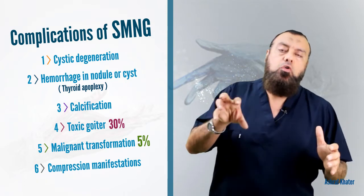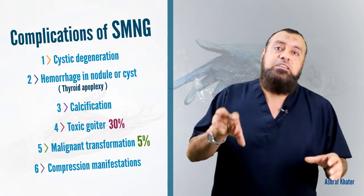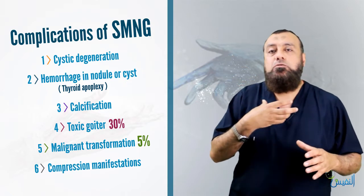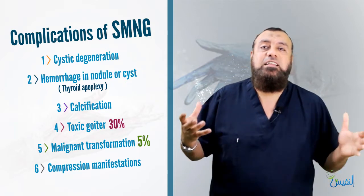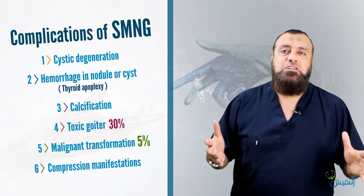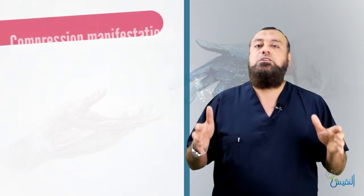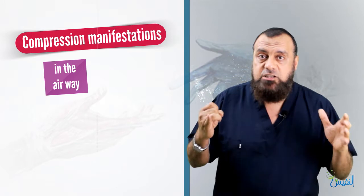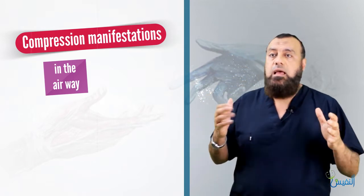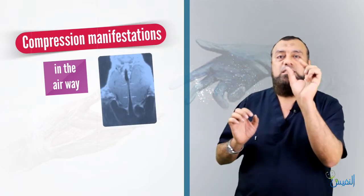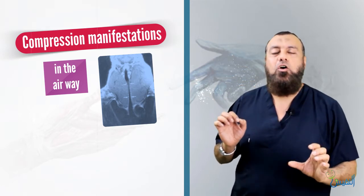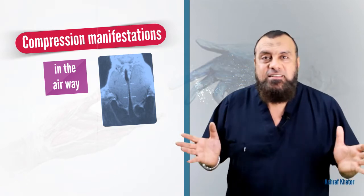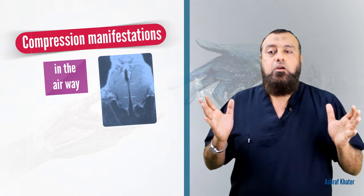The last complication is compression manifestations. The goiter may enlarge enough to cause compression, or may show retrosternal extension — sometimes the whole gland descends into the superior mediastinum causing mediastinal syndrome. Compression on the airway results in tracheal compression; as seen in imaging, the trachea may become a slit, called slit or sword-like trachea, with severe dyspnea.